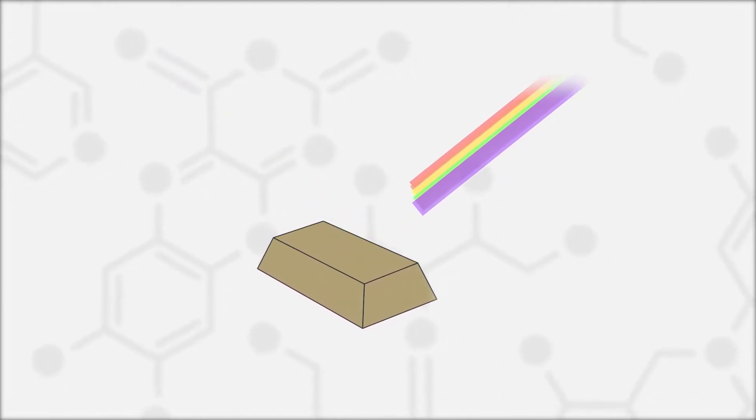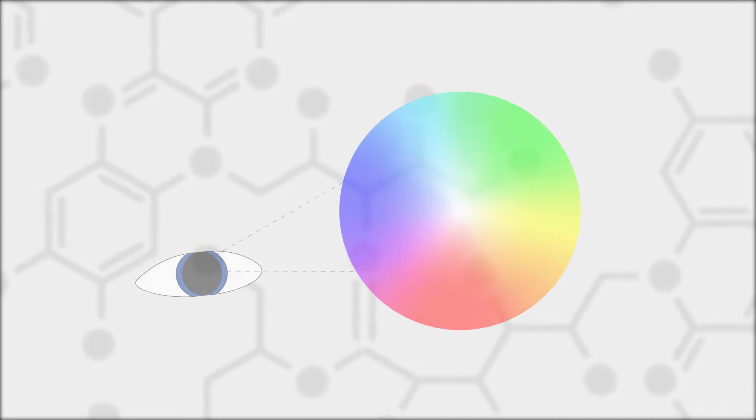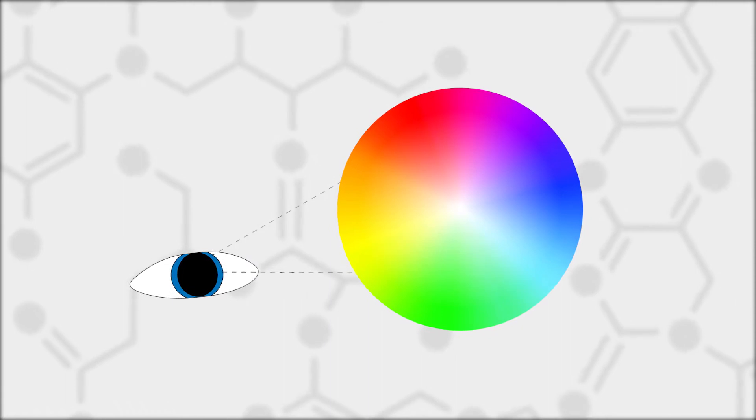Because of this, any light that is then reflected off gold will appear to be lacking in blue. Since yellow is the complementary color to blue, this will make gold appear as yellow under white light.